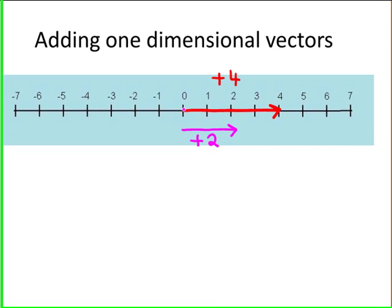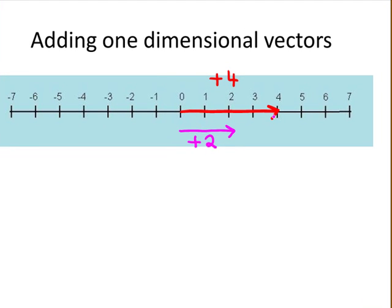To add one-dimensional vectors, here we have the vector plus 4 and the vector plus 2. If you want to add these two vectors together, you can move the plus 2 vector so that its start begins at the end of the plus 4 vector.